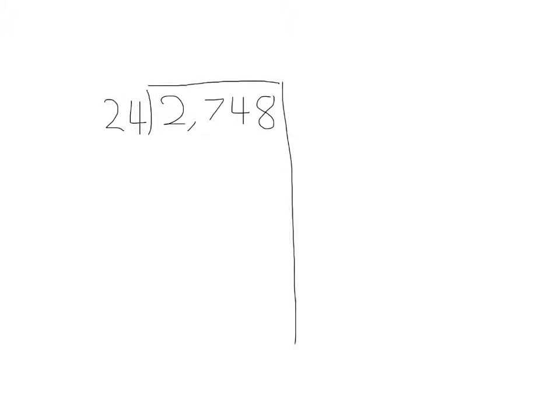We are going to solve this problem by using the partial quotients algorithm. I know there are 100 24s in 2,748. And that would be 348.